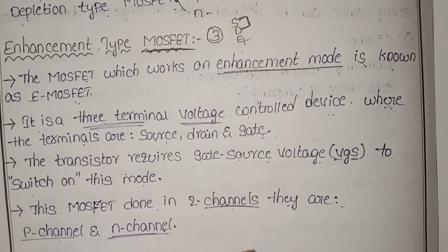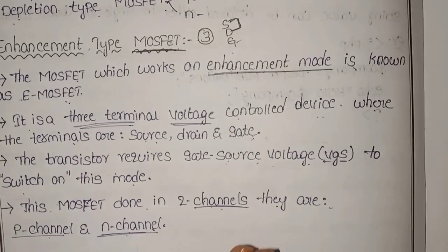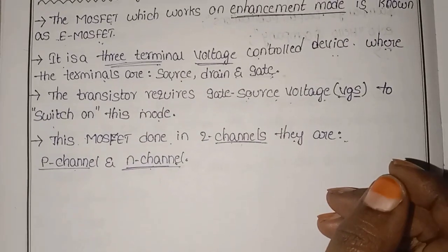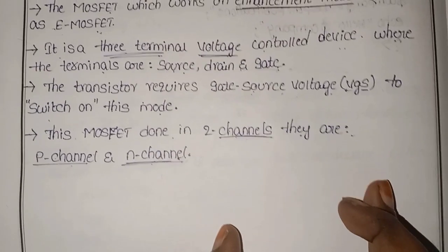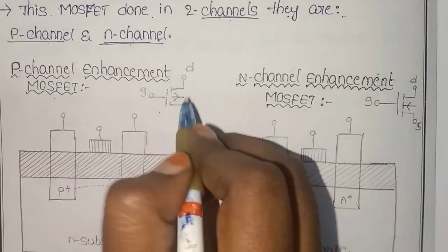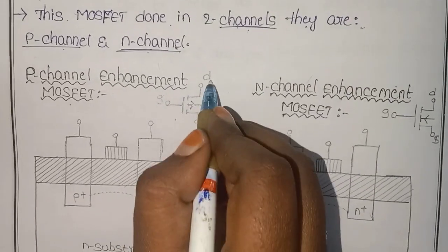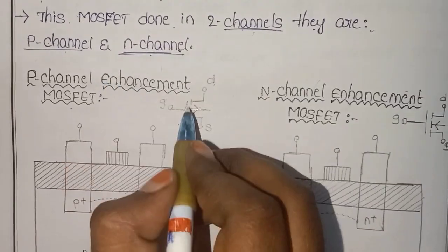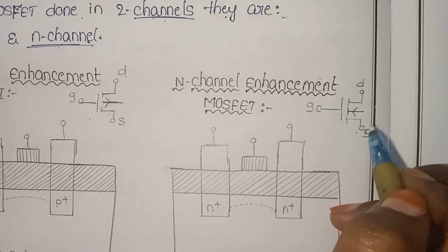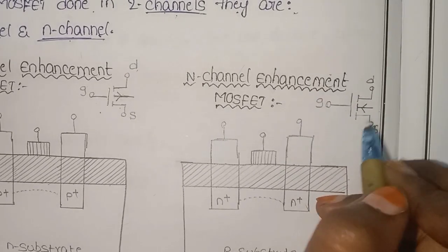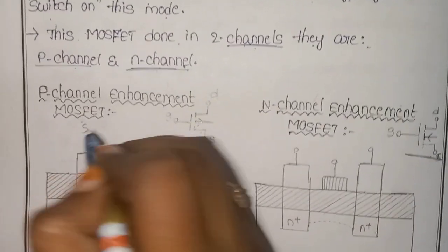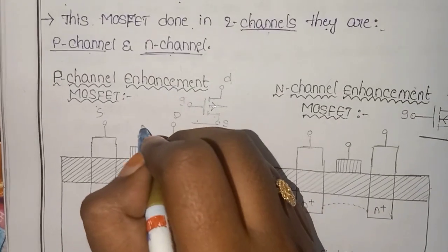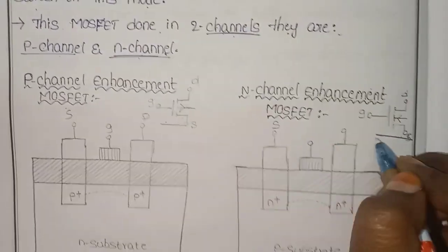I will explain with a diagram. Looking at the screen, the P-channel enhancement MOSFET symbol shows an arrow pointing inward. This has drain, source, and gate terminals connected above. The P-channel enhancement MOSFET has source, drain, and gate as its main terminals.